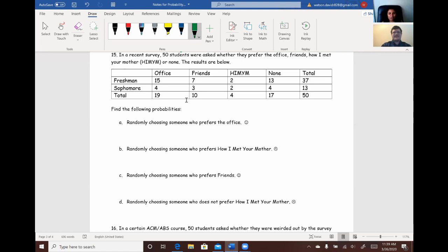So, part A. Randomly choosing someone who prefers the Office. All right. So, for that one, we still have 50 students to work with. So, that's still going to be our denominator. Now, we're just going to be talking about the people who prefer the Office. So, there's 19 students total that prefer the Office. We don't even have to add up the freshman and sophomore this time, because it's actually already done for us. So, we just take the 19, divide it by 50, and you'll get 0.38.